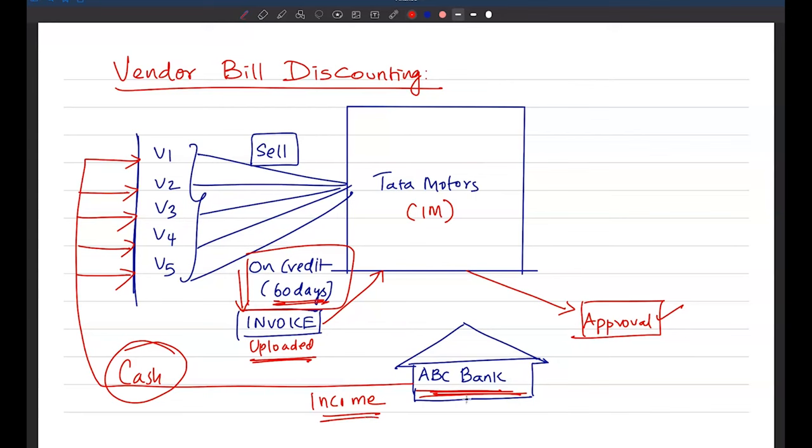And this bank also has very little risk here. Why little risk? Because whatever the money that was given by the bank to these vendors need not be repaid by them. Rather it will be paid by the Tata Motors on that due date, that is 60th day. So on 60th day Tata Motors will honor all the invoices and that payment will come to this bank. So this is how vendor bill discounting happens.